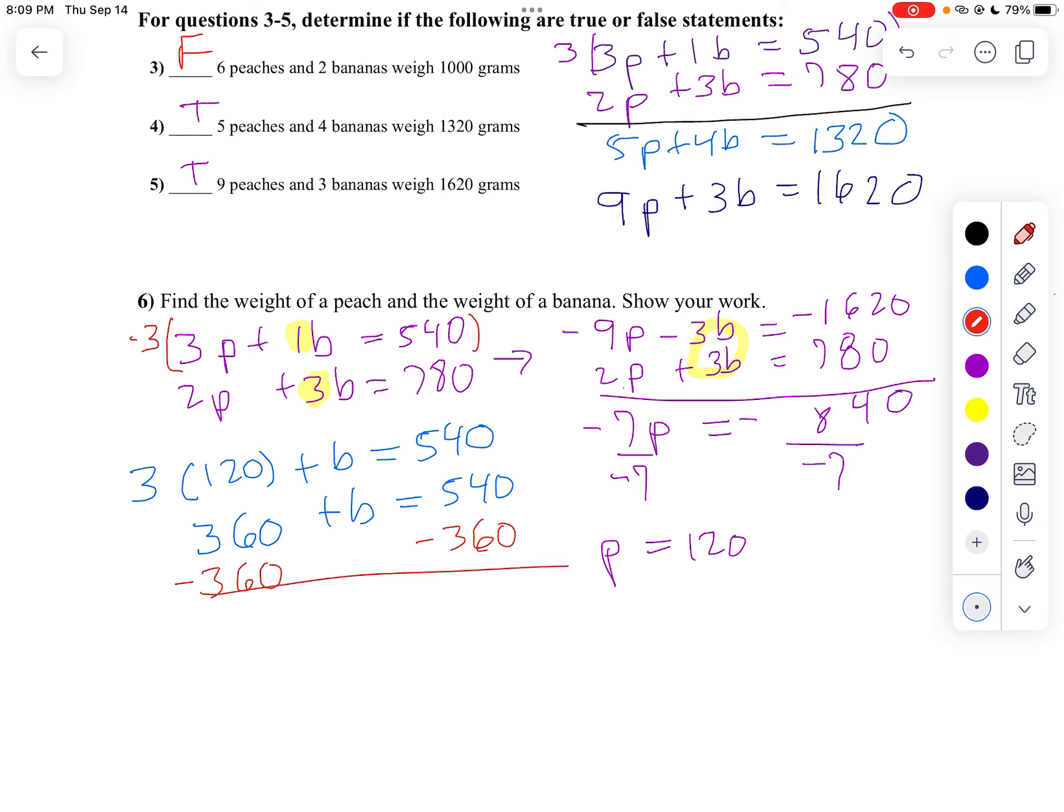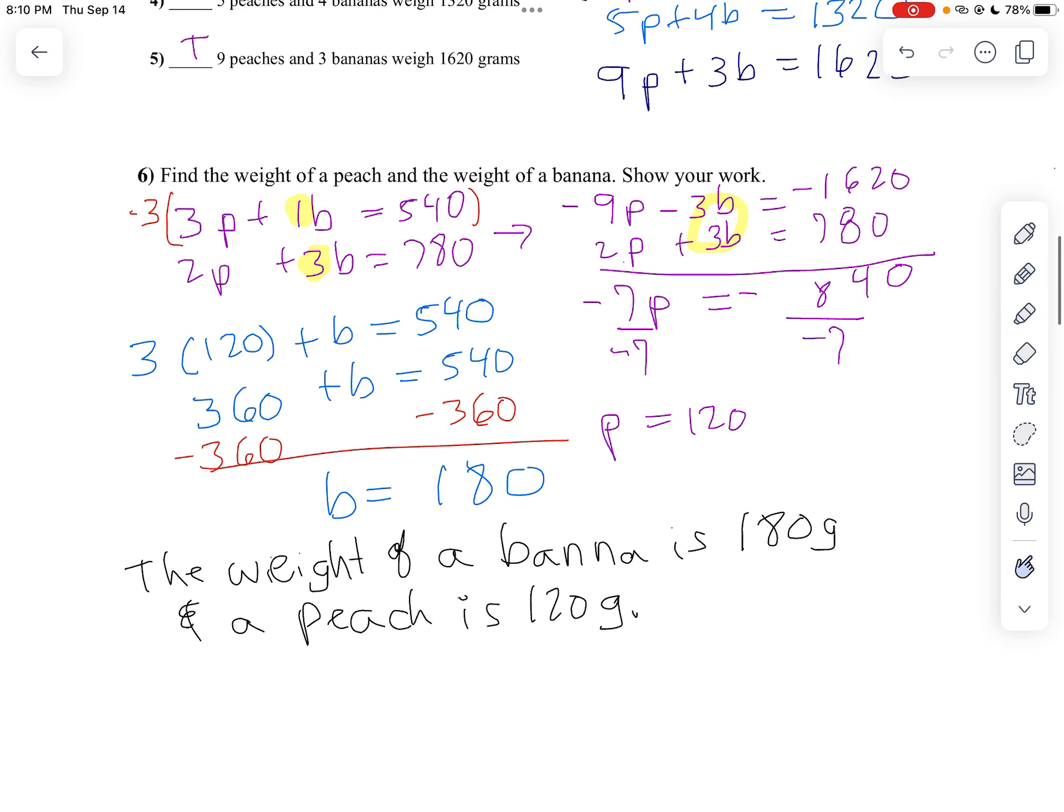So the weight of a banana, 14 minus 6 is 8, 4 minus 3 is 1. And since it's an application problem, we're going to write in a complete sentence. So the weight of a banana is 180 grams, and a peach is 120 grams. And there we have it.